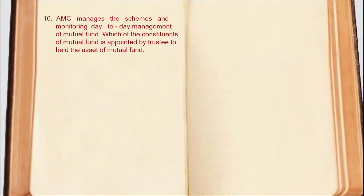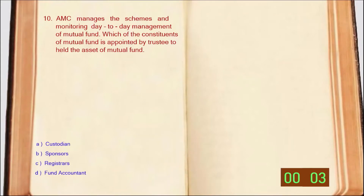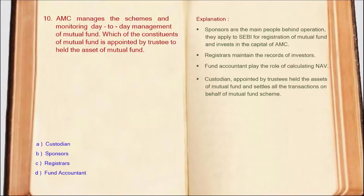Next question: AMC manages schemes and monitors day-to-day management of mutual funds. Which constituent of mutual fund is appointed by trustees to hold the assets of the mutual fund? Sponsors apply to SEBI and invest in AMC's capital. Registrar and transfer agencies maintain investors' records. Fund accountants calculate NAV. The custodian holds mutual fund assets and settles all transactions on behalf of mutual fund schemes. The custodian is appointed by trustees. So the correct answer is Option A: Custodian.